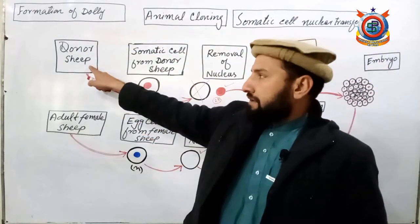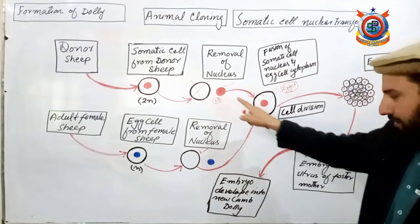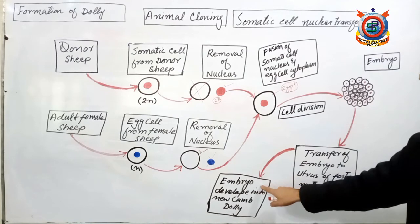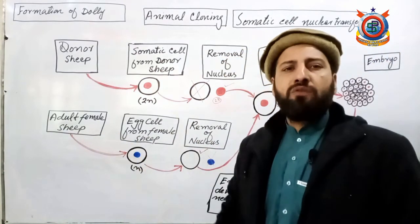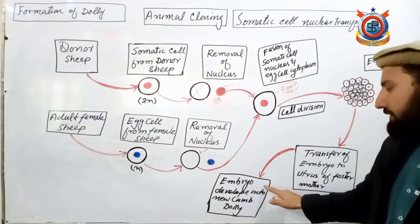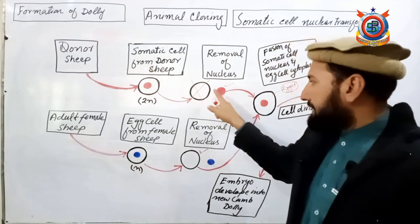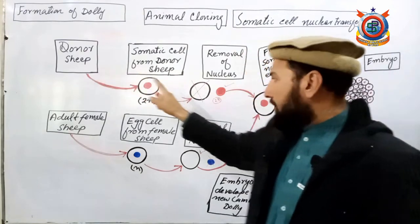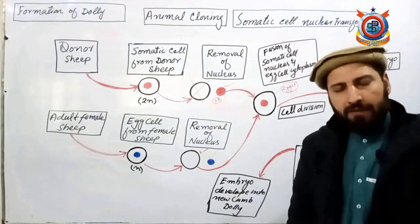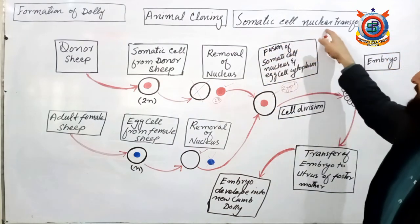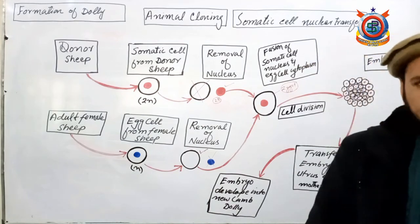It is the donor sheep's exact copy. When this DNA is expressed, it is the same as the donor sheep's DNA — one hundred percent it is the same. This concludes our video lecture on animal cloning. Inshallah, next topic mein aap phir mere saath honge. Allah Hafiz.